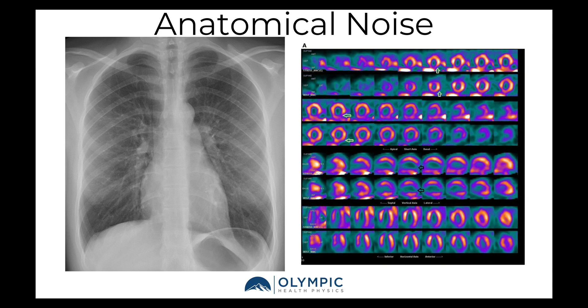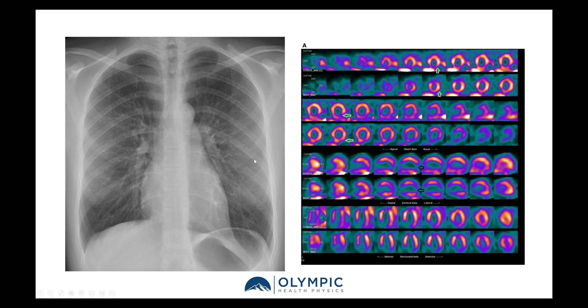For example, on the left we have a 2D projection of a 3D structure — the body has three dimensions yet we're only projecting two dimensions. So we have overlap of anatomical structures where, for example, the ribs are passing over the top of the lungs and the heart is also in front of the lungs, resulting in anatomical noise in the image. The image on the right is a nuclear cardiology stress test where we can see small bowel coming over the inferior section of the heart, creating noise artifacts within the image. That covers the four different types of noise we can see in our images.